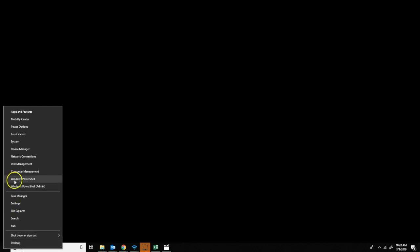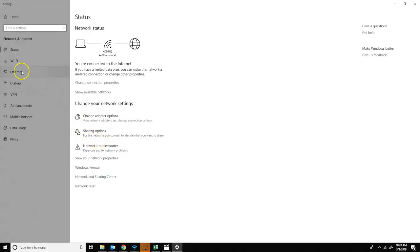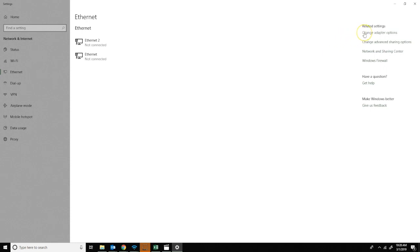click Ethernet on the left, click change adapter options on the right, right-click the network that your computer is connected to, then go to properties.